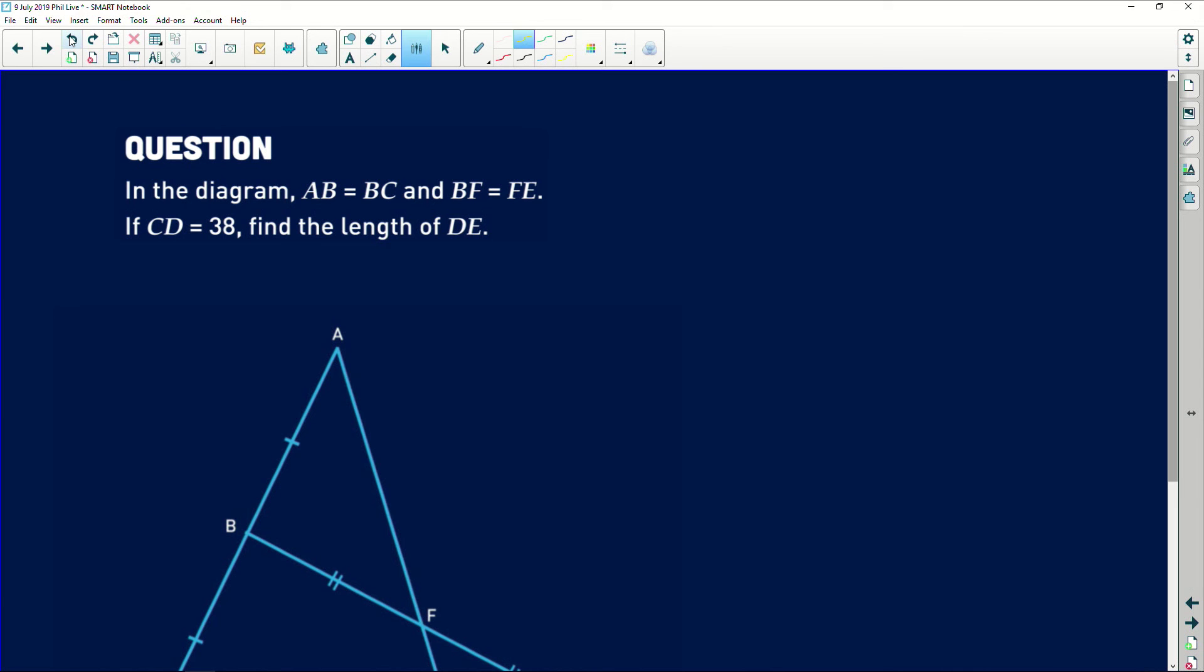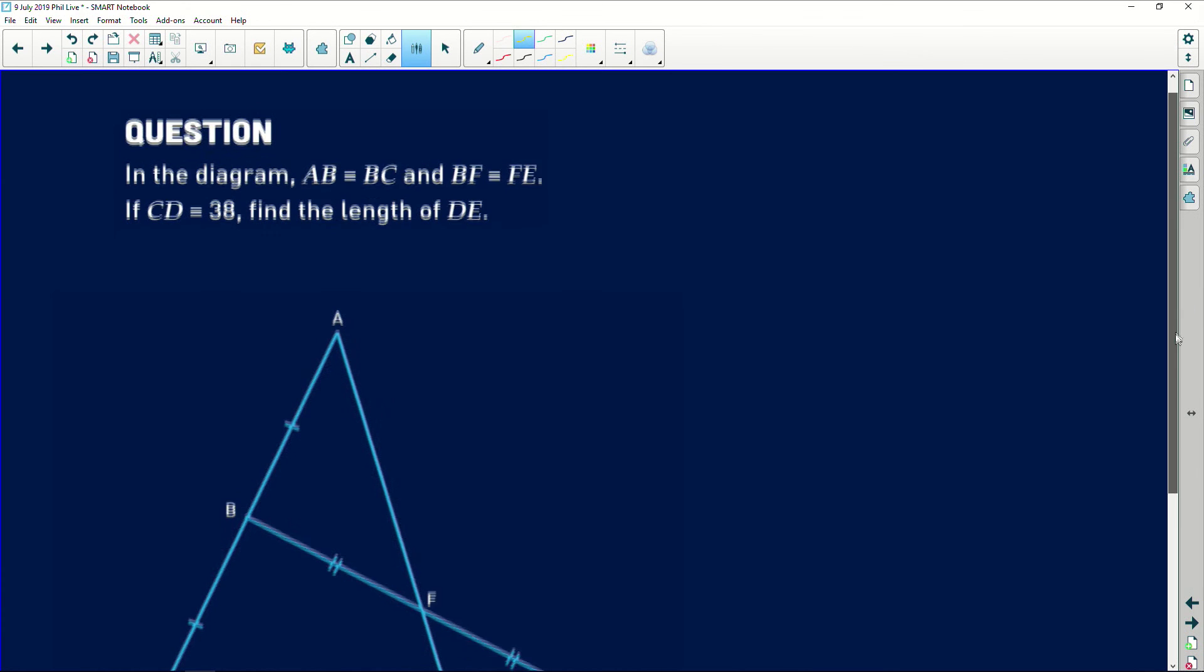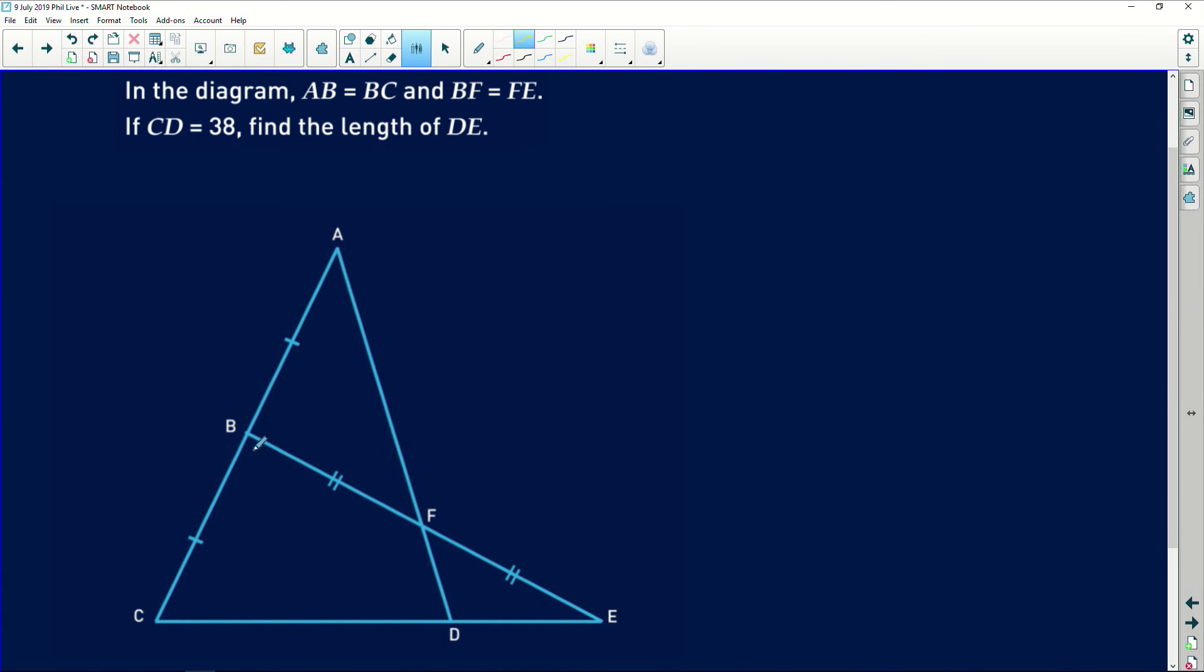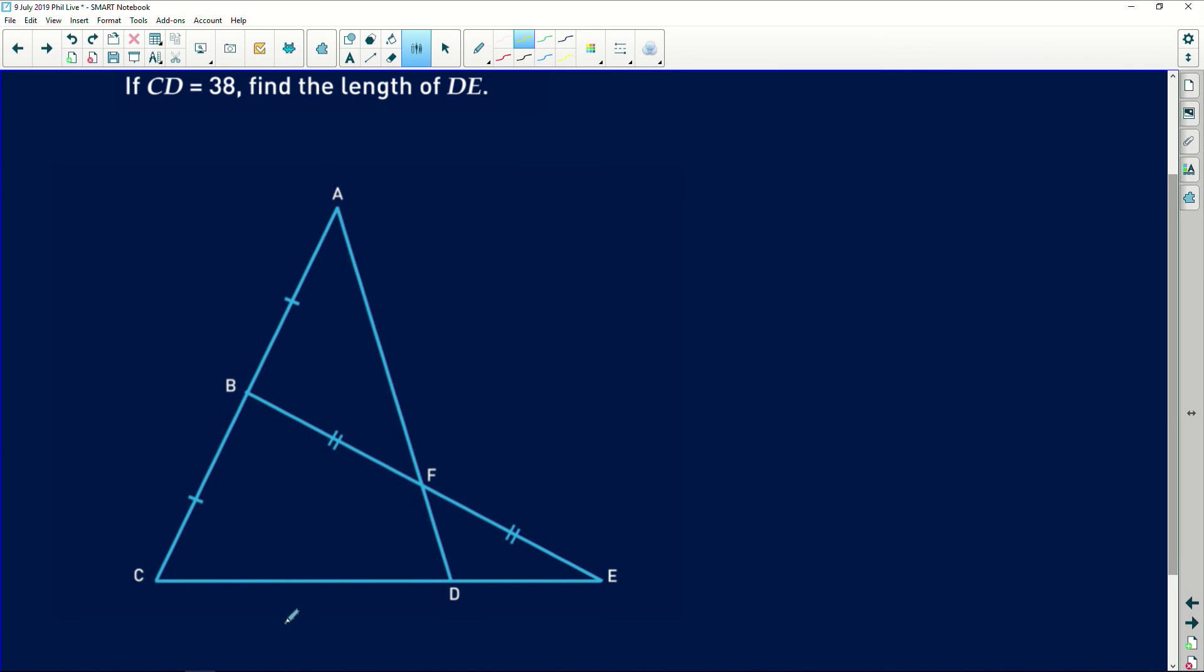It says in the diagram, AB is equal to BC. This length here is equal to that length there. And BF is equal to FE. If CD is equal to 38, so that's this length here, find the length of DE. So we're trying to find this unknown length here.